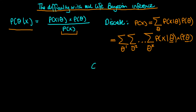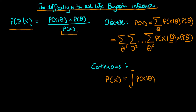In the continuous case, we would calculate the denominator term by the continuous analog of a sum, which is an integral. So we would calculate P(X) by integrating the numerator: P(X|theta) times P(theta) d_theta. In both cases, to calculate the denominator, we are marginalizing out the dependence on theta of our joint distribution of X and theta, since another way of writing the numerator is as the joint distribution of X and theta.